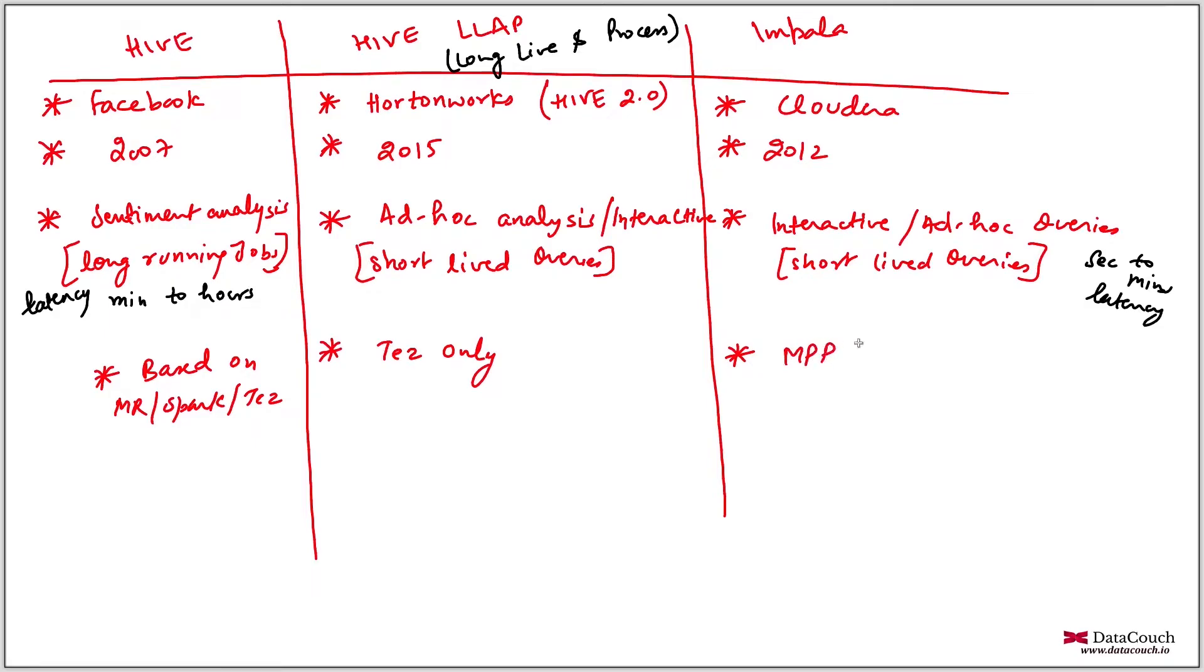And this project Impala is MPP, massively parallel processing, this is the architecture. If you see, this is fault tolerant, this is also fault tolerant because it is also Hive, but Impala is not fault tolerant. So this is very important difference, not fault tolerant.